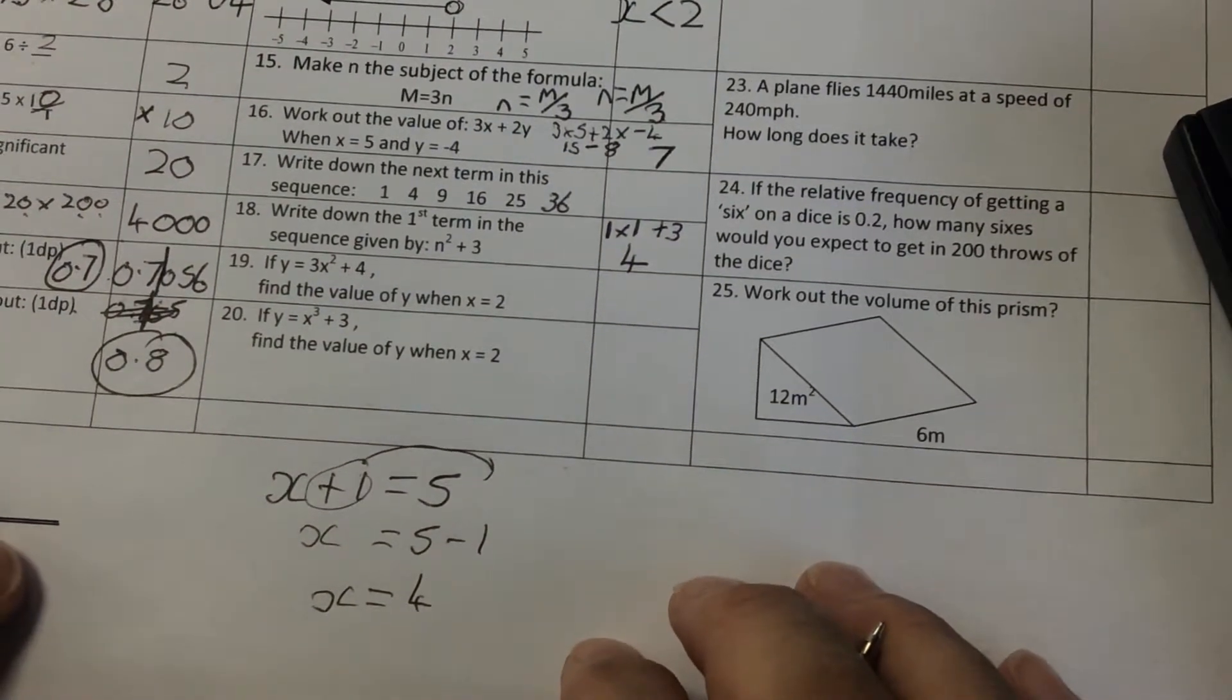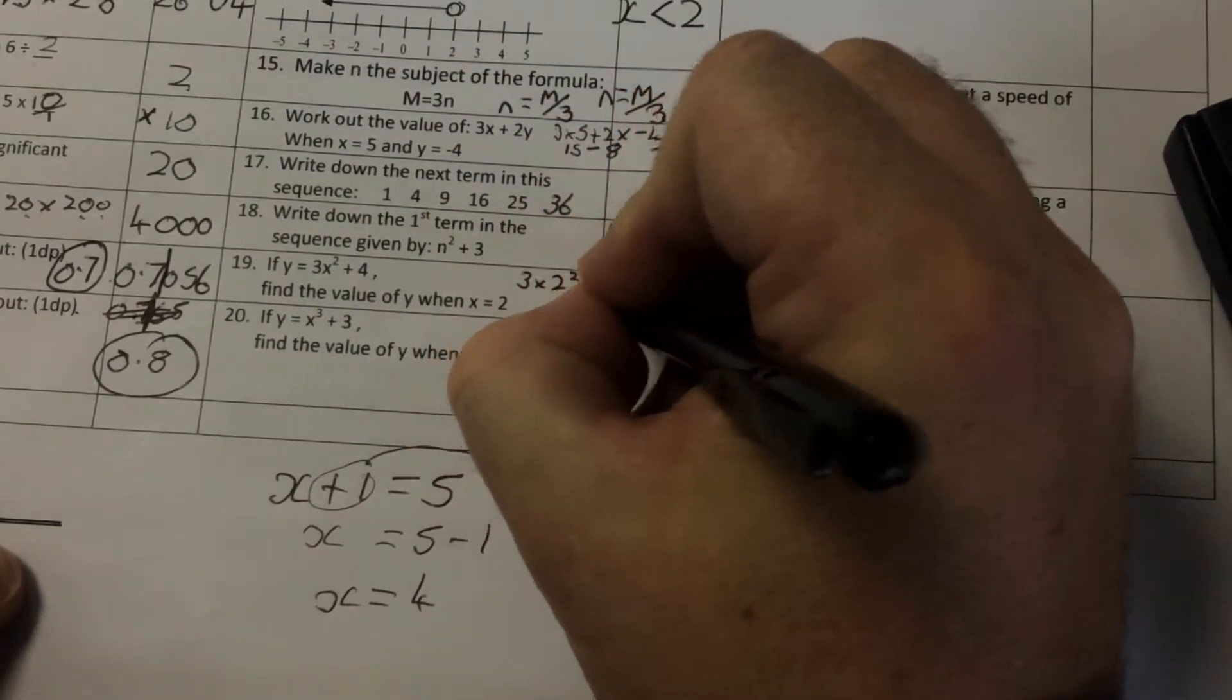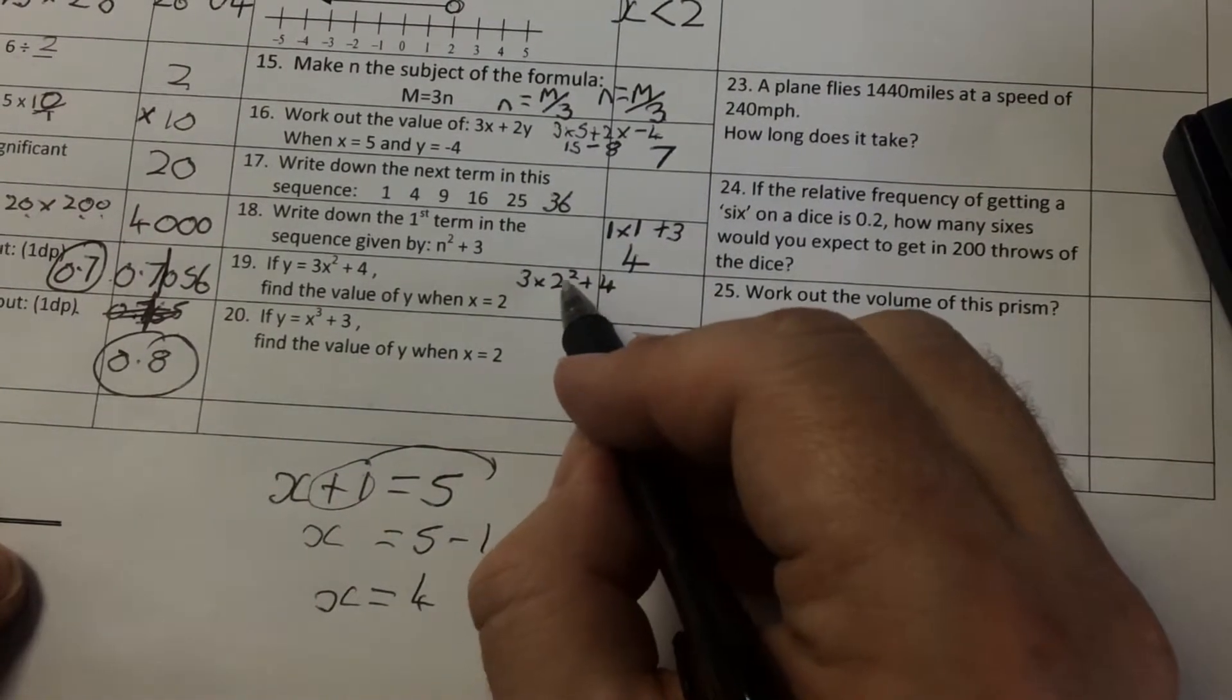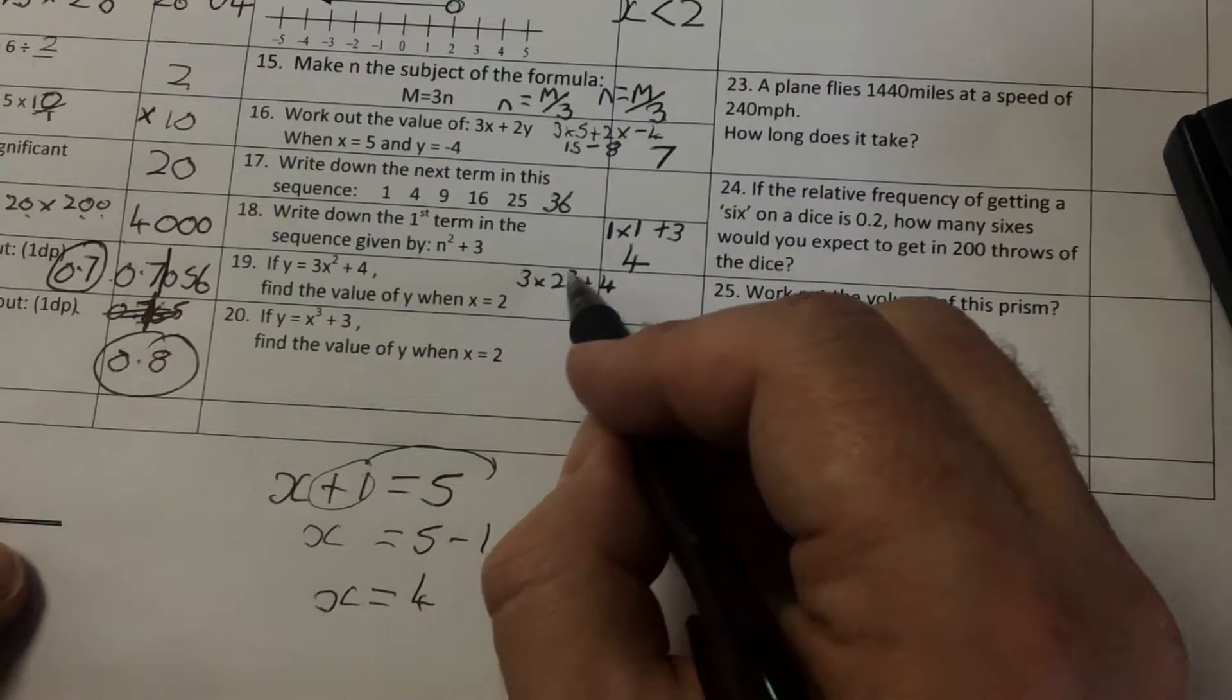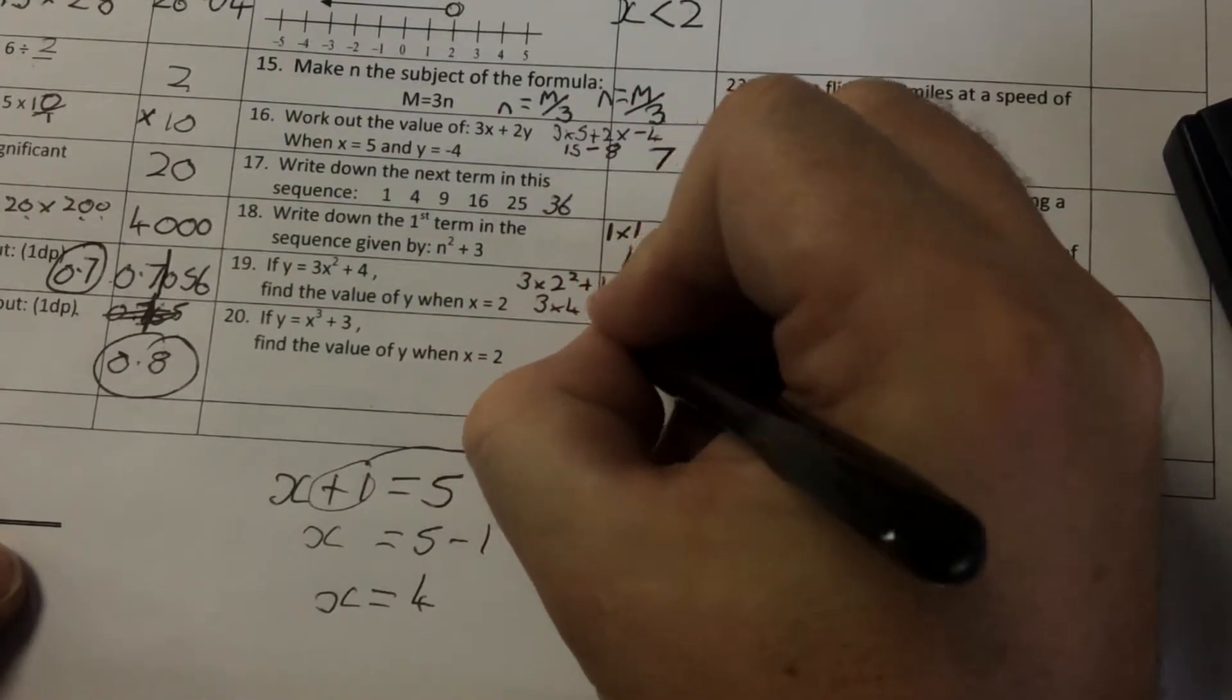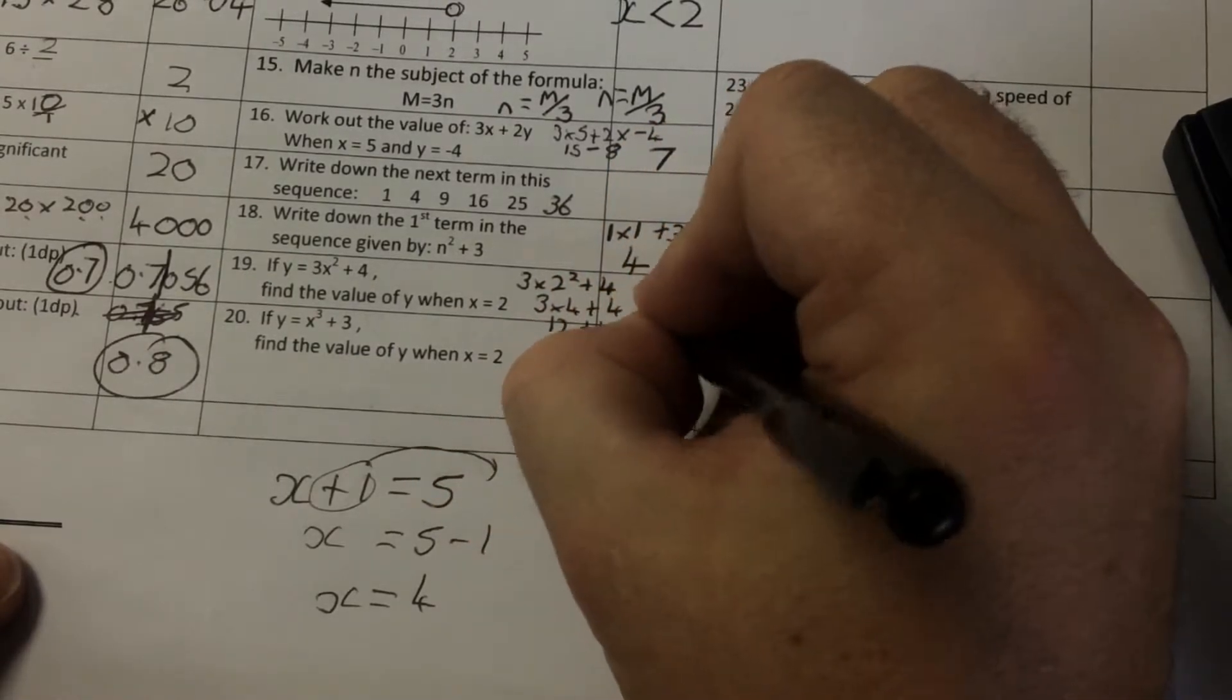Question 19. 3 times x squared. So 3 times 2 squared plus 4. So I'm working that out. A bit of BIDMAS. I do the squared first. So 2 times 2 is 4. So I'm doing 3 times 4, add 4. So 3 times 4 is 12, add 4 is 16.